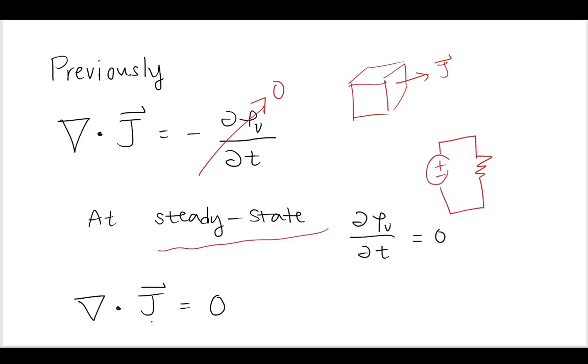So for the continuity equation, this steady state just means that the divergence of the current density is equal to zero.